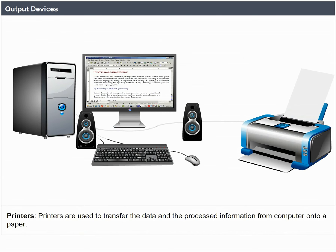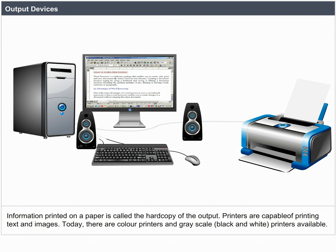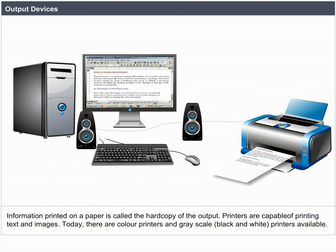Printers are used to transfer data and processed information from the computer onto paper. Information printed on paper is called a hard copy of the output. Printers are capable of printing text and images. Today, there are both color printers and grayscale (black and white) printers available.